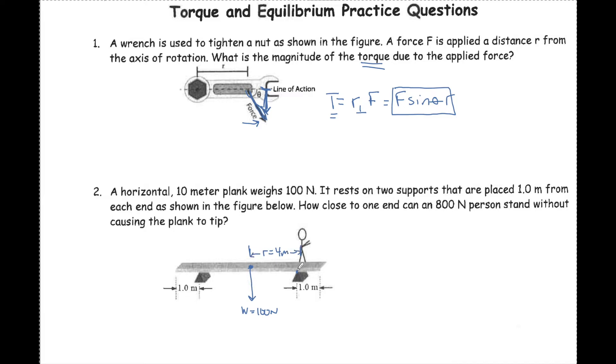Now we have an 800 newton person who will walk out and apply a torque force. We want to know how far can we go without making this thing tip. So we have torque from the board equals torque from the person: FR equals FR. We have 100 newtons times 4 meters equals 800 newtons times X. X equals 0.5 meters.